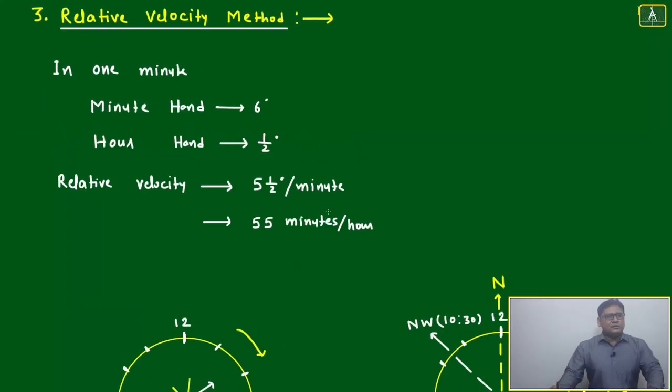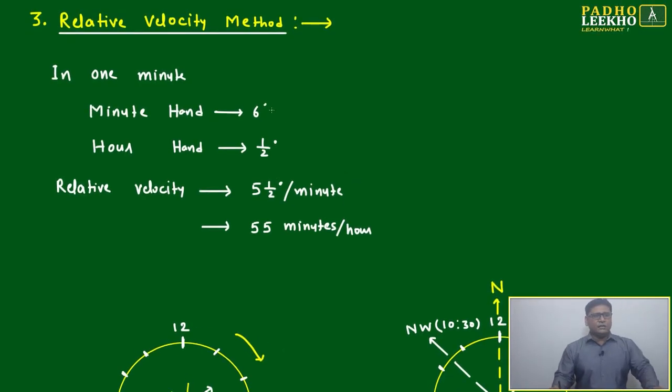Today we'll understand the relative velocity method. I already told you the idea: minute and hour hands move at five and a half degrees per minute or 55 minutes per hour. We can calculate either way.